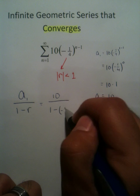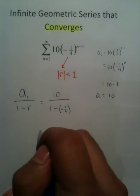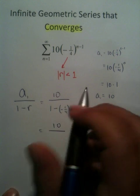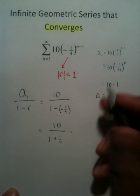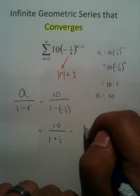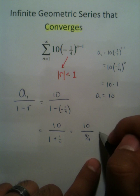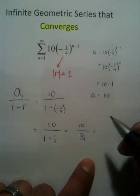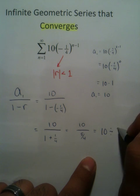1 minus negative one-fourth. Now, I'm going to do a bunch of just arithmetic at this point. 10 over 1 plus one-fourth, because double negatives, which is equal to 10 divided by five-fourths, once you combine these together.